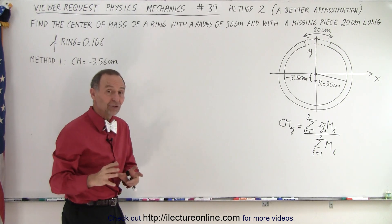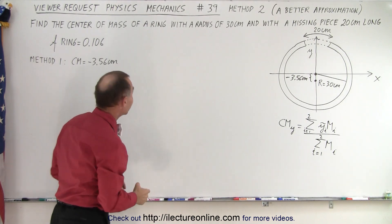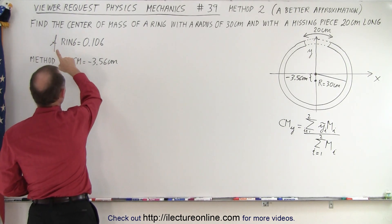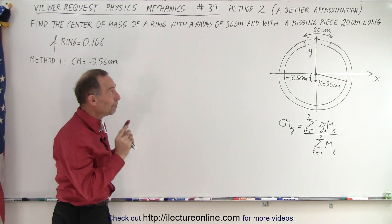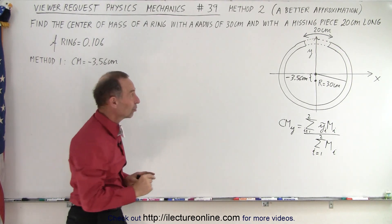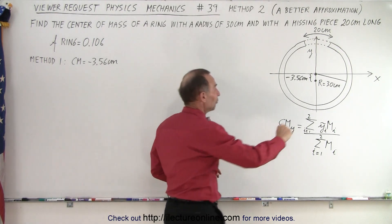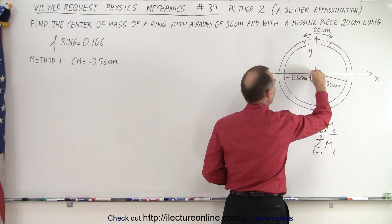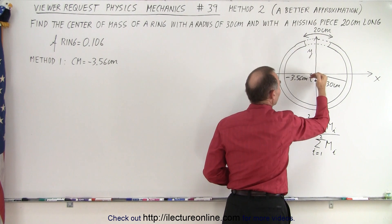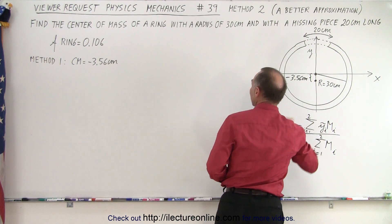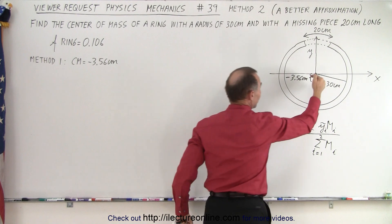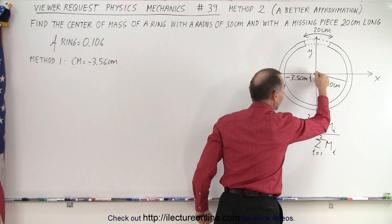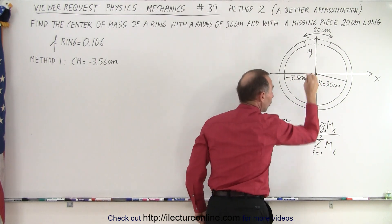But first, in case you didn't see the previous video, let's quickly read the problem. Find the center of mass of a ring with a radius of 30 centimeters and with a missing piece that's 20 centimeters long. If it was a complete ring, the center of mass would be right at the center, but since there's a missing piece, it's going to be somewhat below. We found it to be minus 3.56 centimeters, or 3.56 centimeters below the center of the origin.